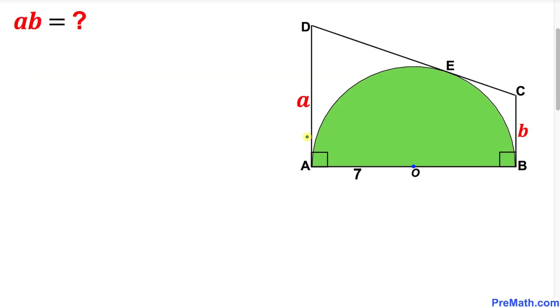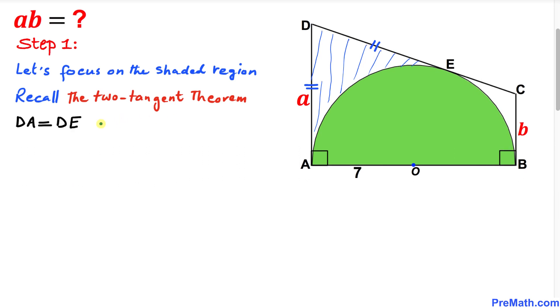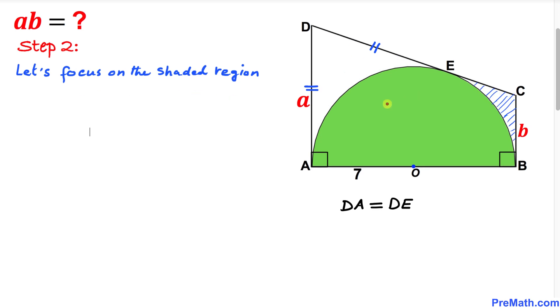Let's get started with the solution. Here's our first step. Let's focus on this shaded region and recall the two tangent theorem. According to this theorem, point D is outside the semicircle, so the two tangent segments DA and DE are equal in length. Therefore, we can write DA equals DE.